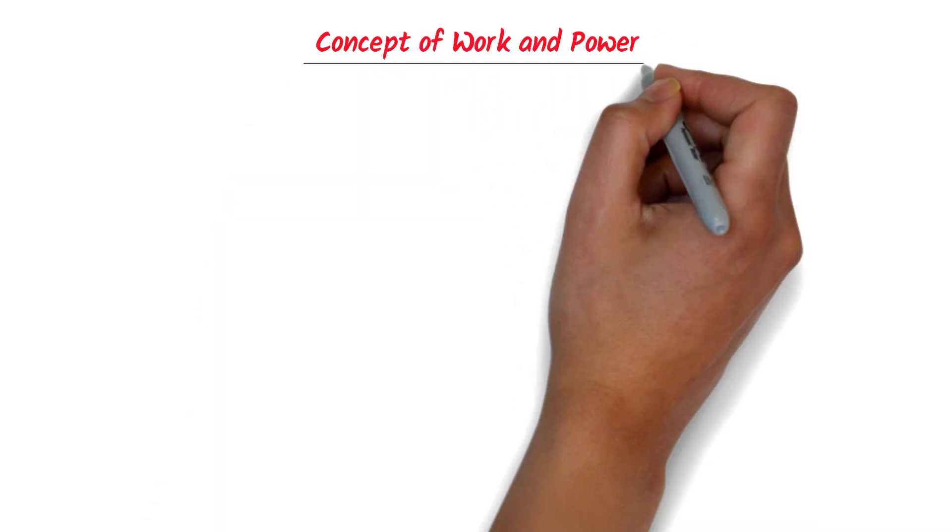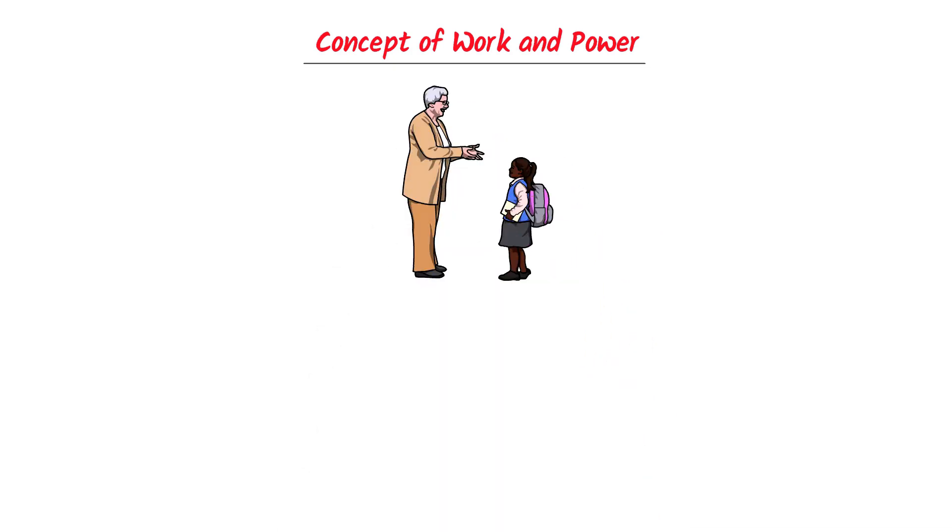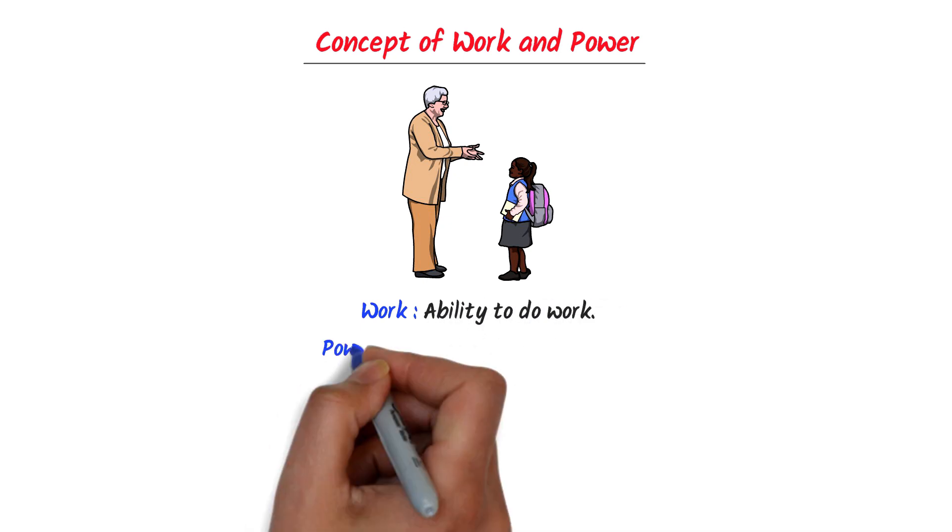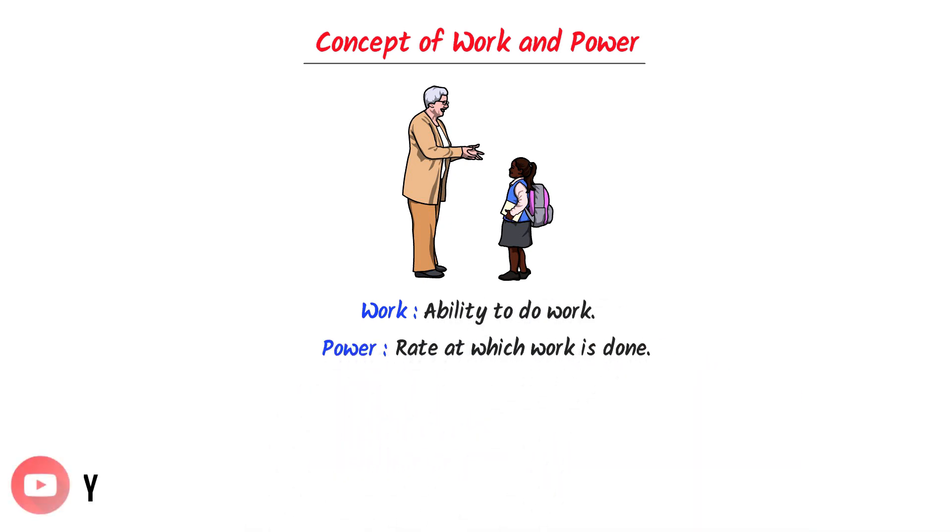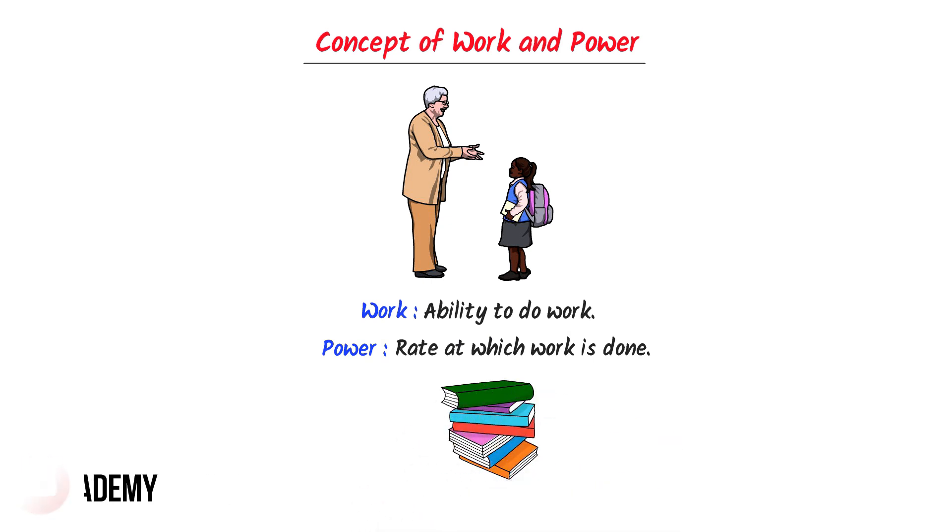Basic concept of work and power. Whenever I ask students about work and power, they always say that energy is the ability to do work and power is the rate at which work is done. According to the textbook, both the answers are correct.